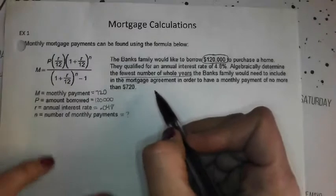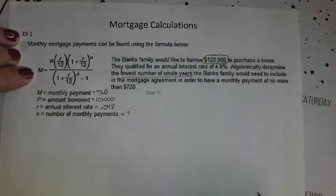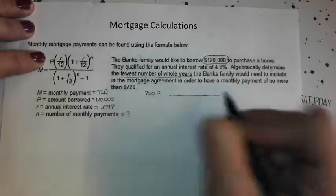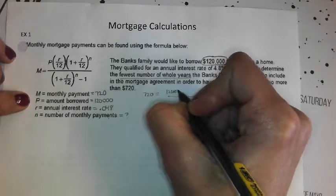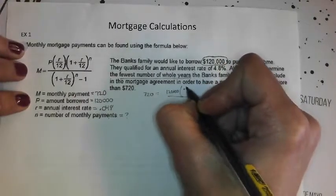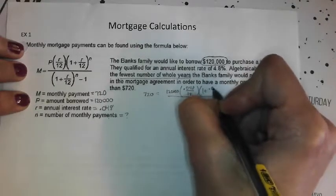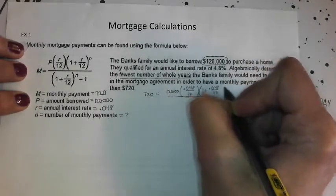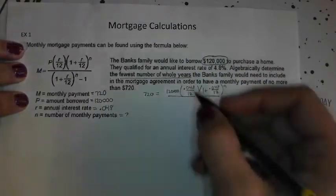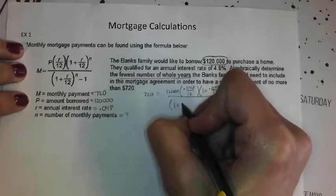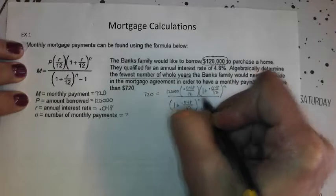The Banks family would need to include in the mortgage agreement in order to have a monthly payment of no more than $720. So we're going to figure this out as if their monthly payment is exactly $720 and then adjust and answer the question from there. So let's plug in, try to write small. We have 720 equals, there's my big denominator, capital P is 120,000.